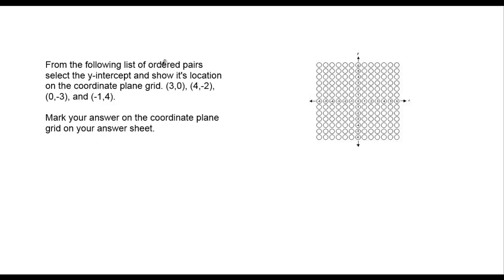From the following list of ordered pairs, select the y-intercept and show its location on the coordinate plane grid: (3,0), (4,-2), (0,-3), and (-1,4). Mark your answer on the coordinate plane grid on your answer sheet. So the coordinate plane grid on your answer sheet will look like this. I just put it next to the question for this video.